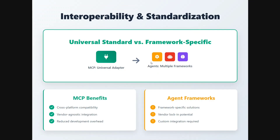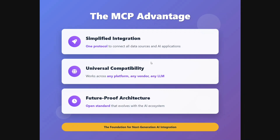I think you might have now understood the difference. Interoperability and standardization: MCP is a universal standard protocol, while AI agents are usually framework-specific. MCP benefits include cross-platform compatibility and reduced development overhead — you create a tool using MCP once and it can be integrated with anything. While with AI agents, framework-specific solutions are required; an agent created in LangGraph might not be usable in CrewAI, and custom integrations are usually needed. The advantages of MCP are simplified integration, universal compatibility, and future-proof architecture, while AI agents use MCP to achieve standardized tool integration.